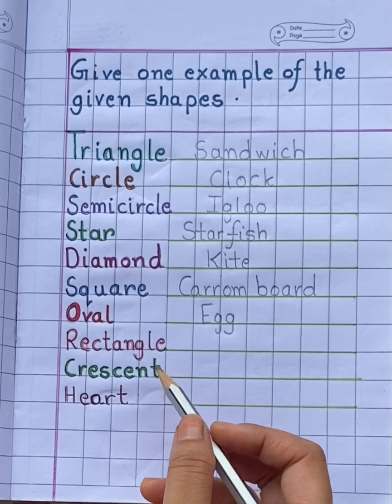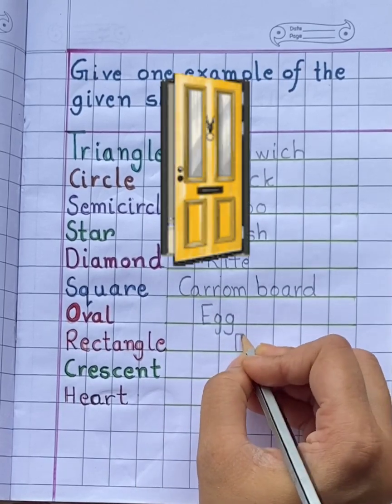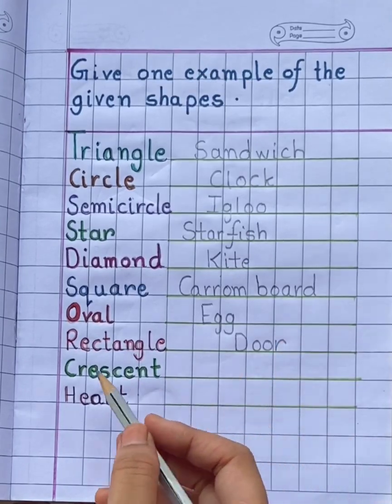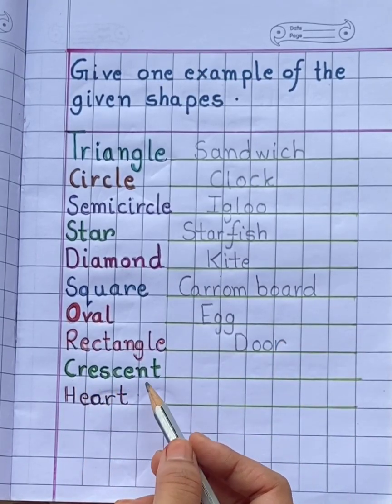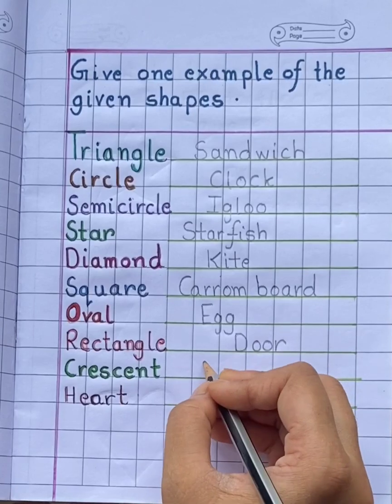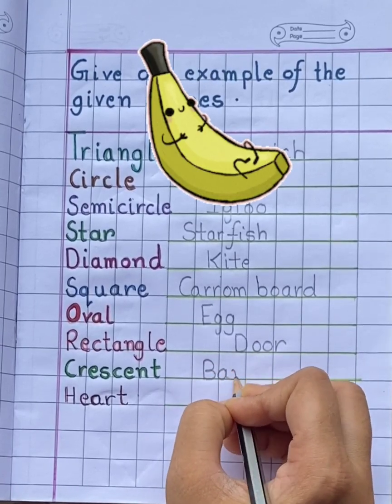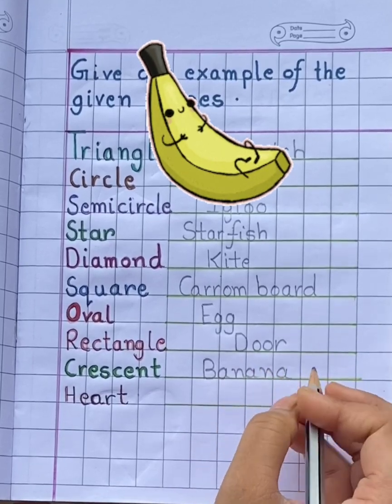Rectangle. Example of rectangle is door. D-O-O-R. Crescent. Example of crescent is banana. B-A-N-A-N-A.